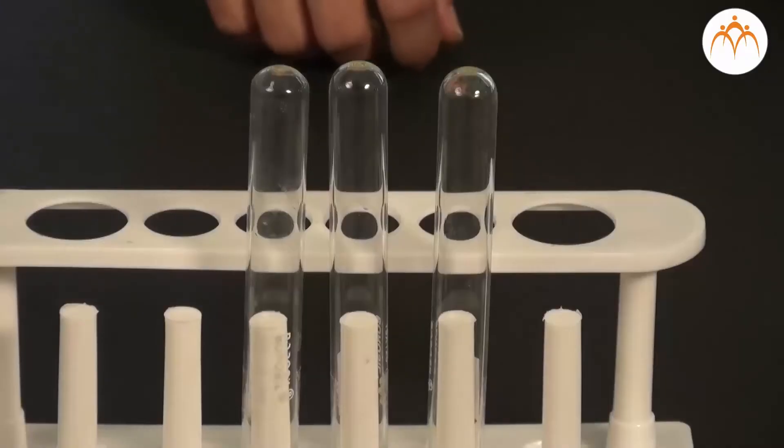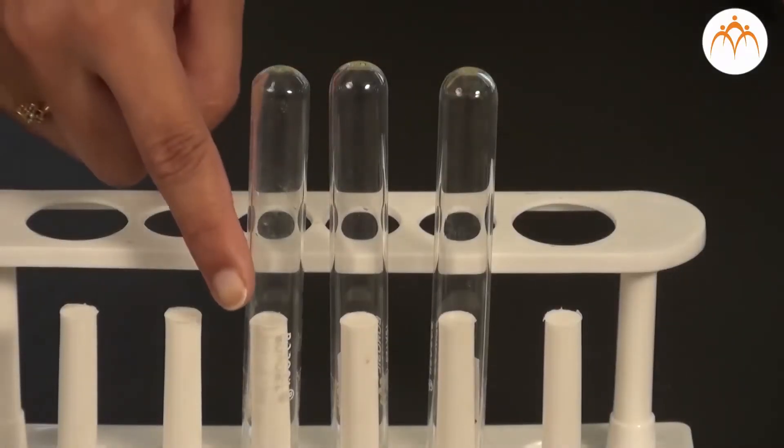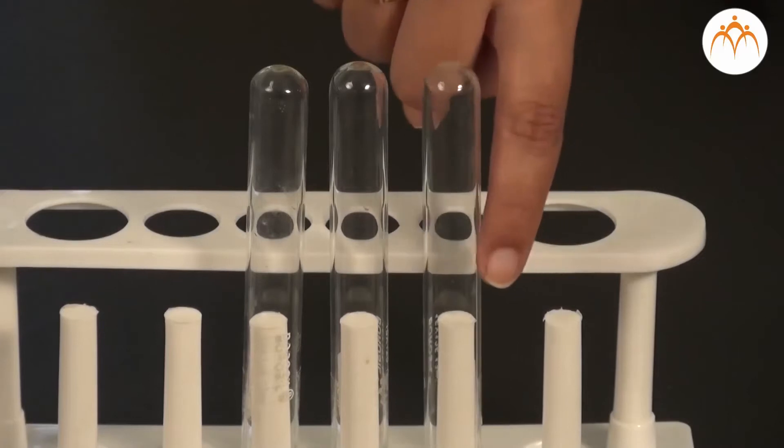In this experiment, we will identify chloride, bromide and iodide ions from the given salts. We need apparatus like test tubes, stand, droppers, etc.